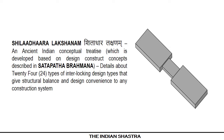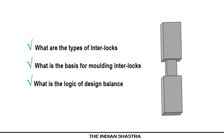Shiladhara Lakshanam, an ancient Indian conceptual treatise developed based on design and construct concepts described in Shatapata Brahmana, details 24 types of interlocking design types that give structural balance and design convenience to any construction system. We shall see what are the types of interlocks, what is the basis for molding interlocks, and what is the logic of design balance in such interlocks.